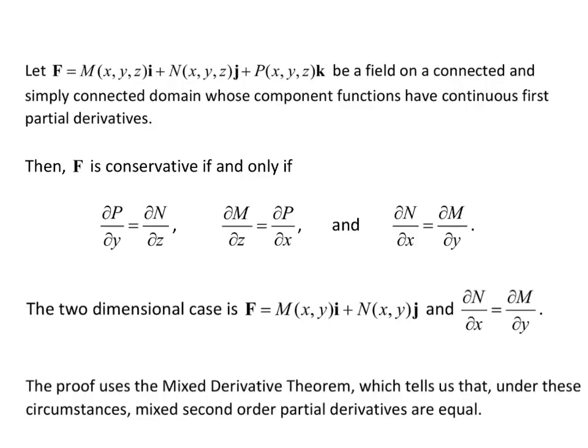Now the proof of this statement uses the mixed derivative theorem, which tells us that under these circumstances mixed second order partial derivatives are equal. So if capital F was a gradient field, then m, n, and p would already be first order partial derivatives of some potential function lowercase f. And so these partial derivatives in our definition would actually be second derivatives of our potential function f, which is why the proof uses the mixed derivative theorem.